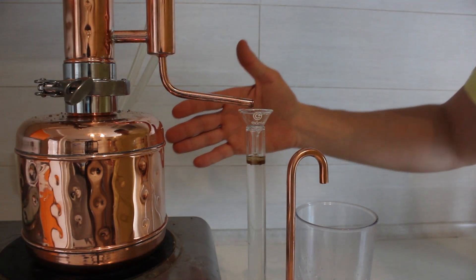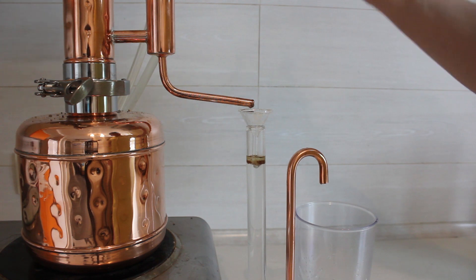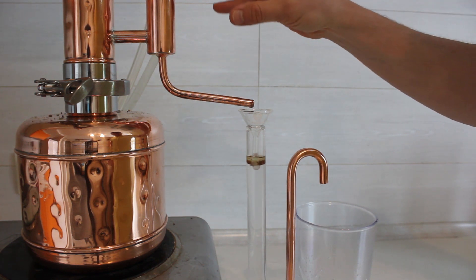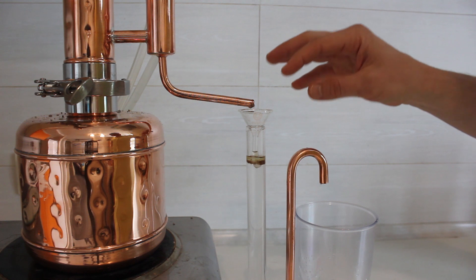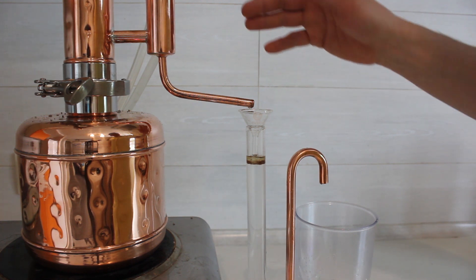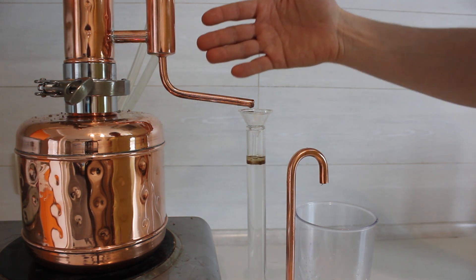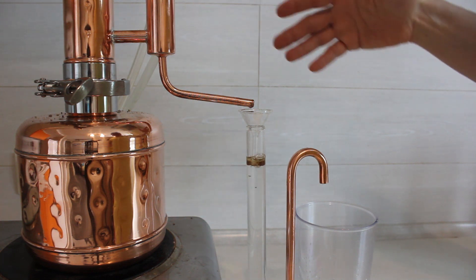When you use a two-liter alembic, you don't need to wait a long time till you get the whole content of essential oil from the column. Just five minutes of dropping will be enough, and then you have to change the content to get more essential oil.